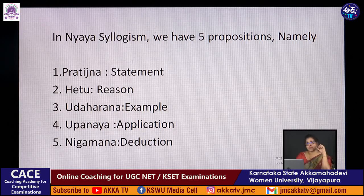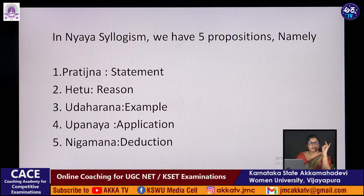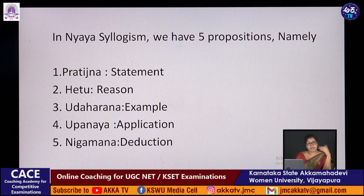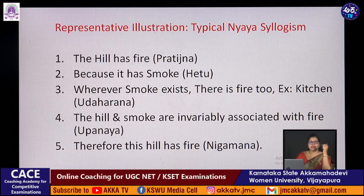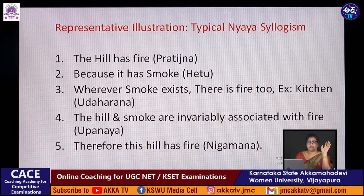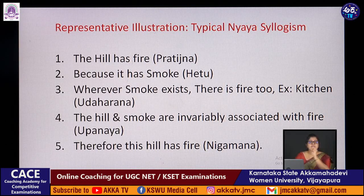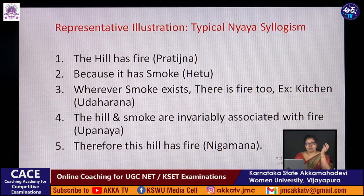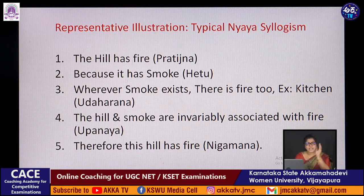In Nyaya syllogism we have five propositions: pratidnya, hethu, udaharana, upanaya, and nigamana. For example: 'The hill has fire' — that is pratidnya. 'Because it has smoke' — that is hethu. 'Wherever smoke exists, there is fire too' — that is udaharana. 'The hill and smoke are invariably associated with fire' — that is upanaya. 'Therefore, this hill has fire' — that is nigamana.